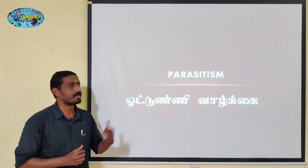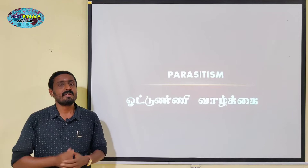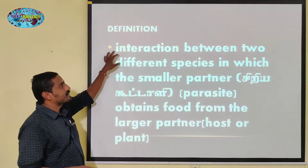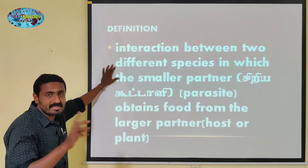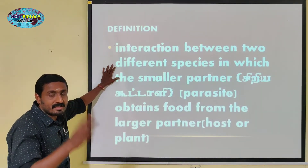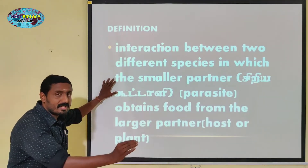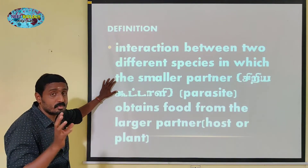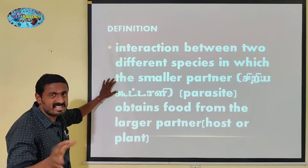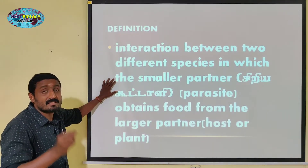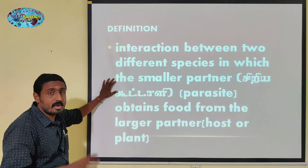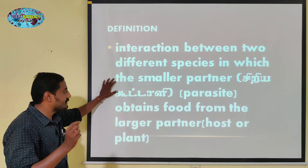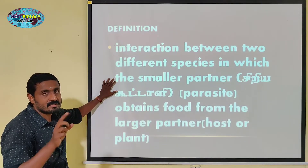What is the definition of Parasitism? Parasitism is an interaction between two different species. One is the smaller partner — that is called the parasite. The other is the larger partner — that is called the host.